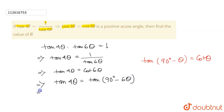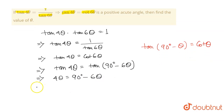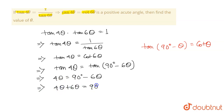So both sides, we can cancel the tan, giving us 4θ equals to 90° minus 6θ. Moving −6θ to the left hand side, we get 4θ plus 6θ equals to 90°, or 10θ equals to 90°.